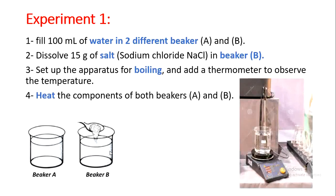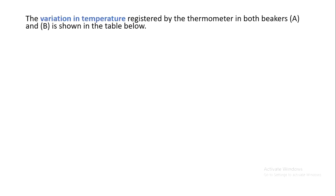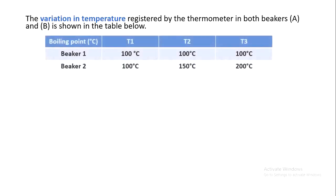Then I will set up the apparatus for boiling and add a thermometer to observe the temperature in both beakers A and B. I will start heating the contents of both beakers A and B. In beaker A I have water, and in beaker B I have water plus salt. Both beakers will be heated on a boiling apparatus until boiling. The variation in temperature registered by the thermometer in both beakers A and B is shown in the table below.